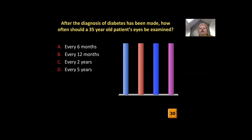The next question: after the diagnosis of diabetes has been made, how often should a 35-year-old patient's eyes be examined? So they come into the endocrine clinic, they're discovered to be a diabetic — how often should their eyes be examined? The answers ranged: every six months, 12 months, or two years. With the majority of you saying 12 months, no one said every five years. I can tell you right away that's not the correct answer.